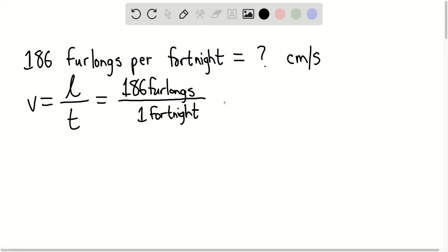Now, we know that there are 220 yards per every furlong. And one fortnight is two weeks or 14 days.